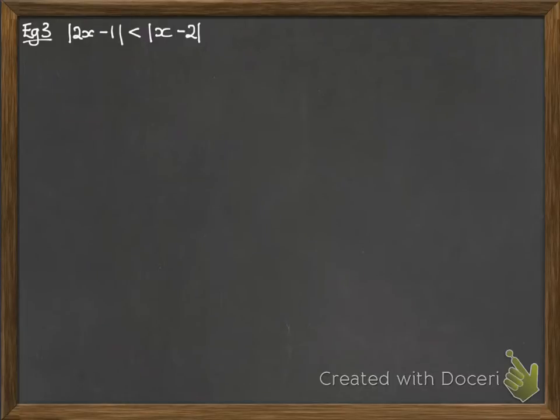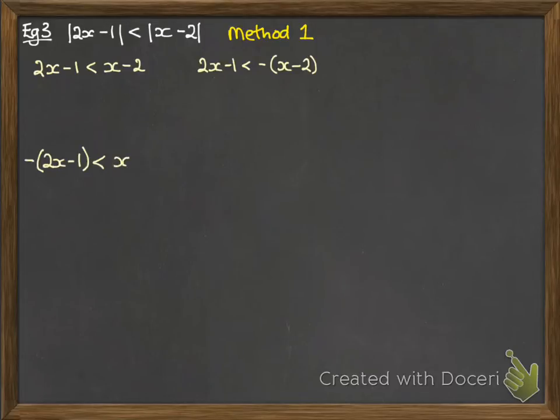Okay, going one step further, we've got the modulus of 2x minus 1 is less than the modulus of x minus 2. Now I'm going to take you through two methods of doing this. So the first method is looking at it completely algebraically, considering each of the regions. So we could have that both of those are positive. We could also have that the 2x minus 1 is positive and the x minus 2 is negative. We could have that the 2x minus 1 is negative and the x minus 2 is positive. And then we could have that they were both negative.